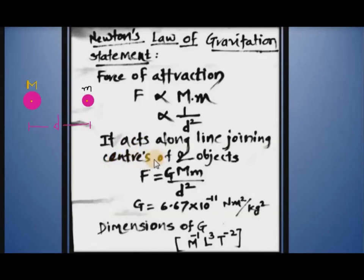Force of attraction F equals G capital M small m upon t square. This gives you the value of force of attraction between two objects separated by distance t.